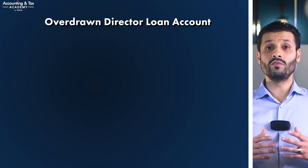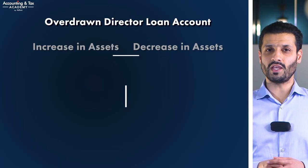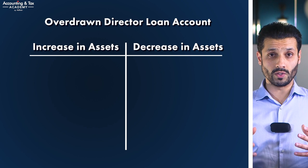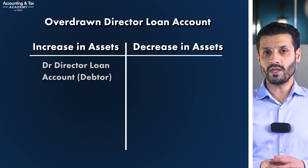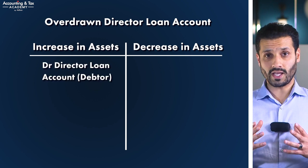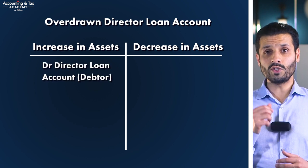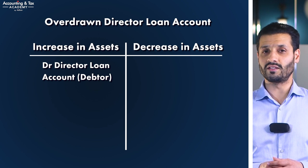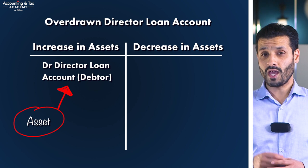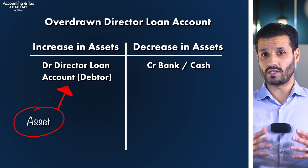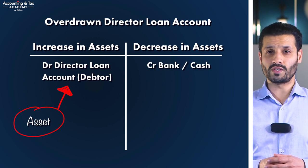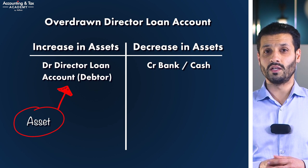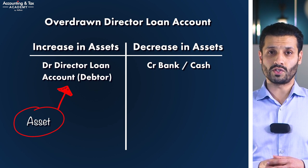Starting with an overdrawn director loan account, the accounting entries in your company would be as follows. Debit director loan account — in other words, debtor. This means your company is owed this money at a point in time, so it's recognised on the balance sheet as an asset. And credit bank or cash — meaning liquid funds have left your business bank account and have been paid across to you, the director, into your personal account.